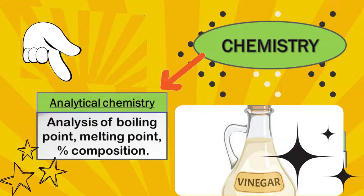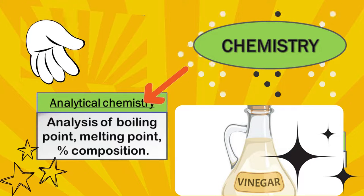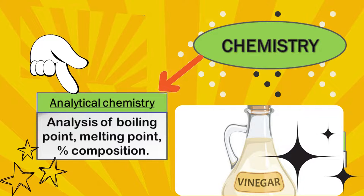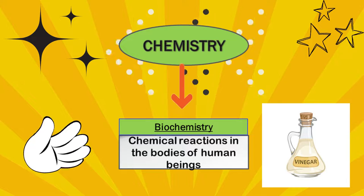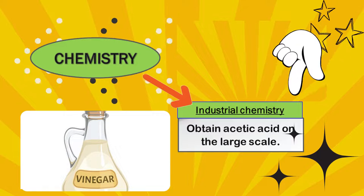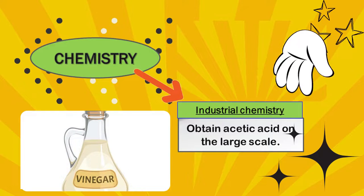In analytical chemistry, we analyze boiling point, melting point, and percent composition of vinegar. Chemical reactions in the bodies of human beings due to vinegar are studied in biochemistry. Obtaining acetic acid on a large scale is studied in industrial chemistry.